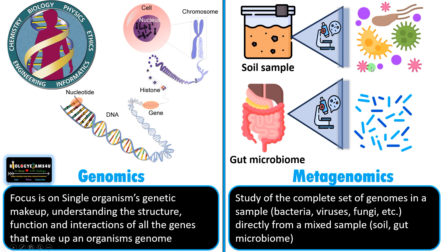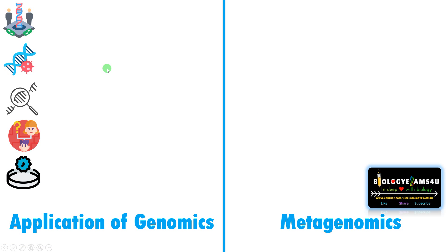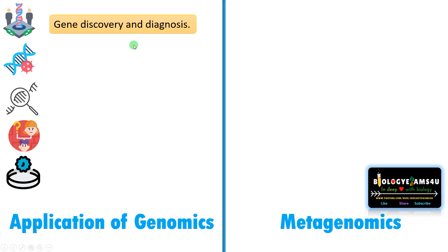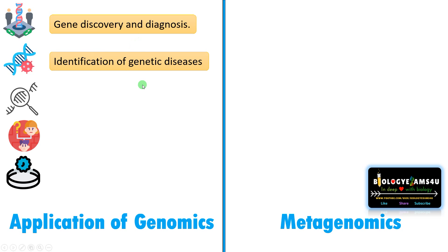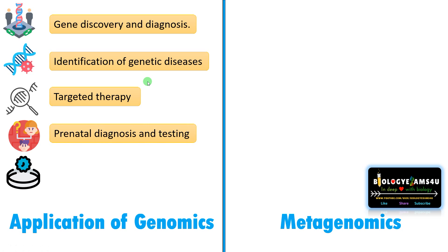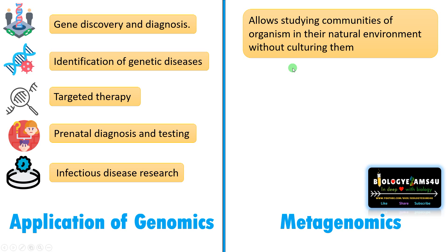The applications of genomics include gene discovery and diagnosis, identification of genetic diseases, targeted therapy, prenatal diagnosis and testing, and infectious disease research. The key advantage of metagenomics is that it allows studying communities of organisms in their natural environment without culturing them.